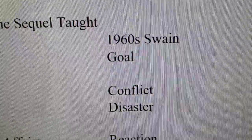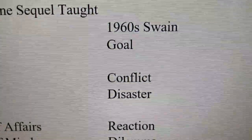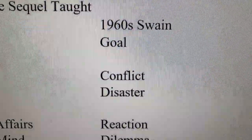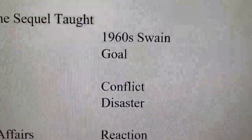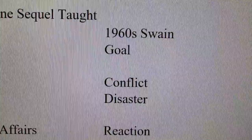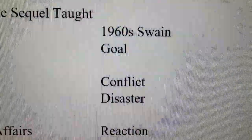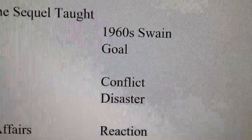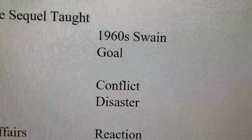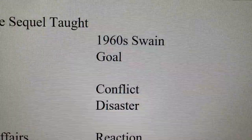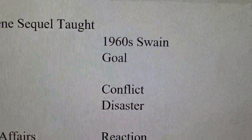So that fits with Swain's framework: the goal is he's riding and wants to get to Austin to hire a cook; the conflict is the horse wants to get rid of the rider and run free; and the disaster is he's thrown.